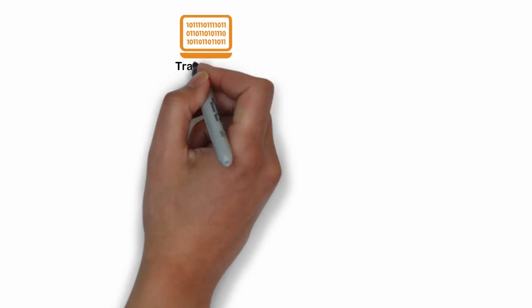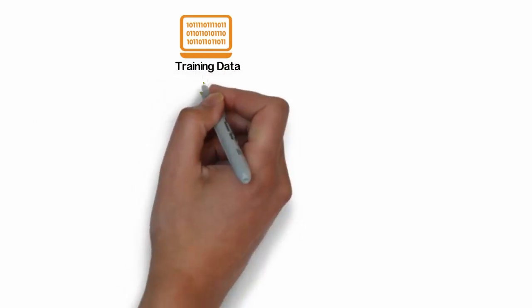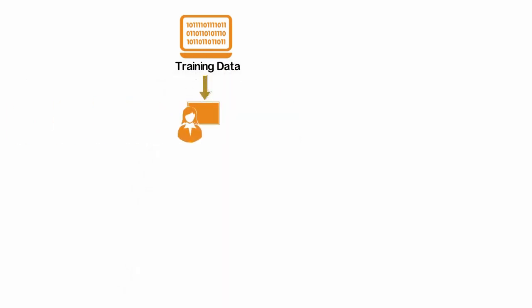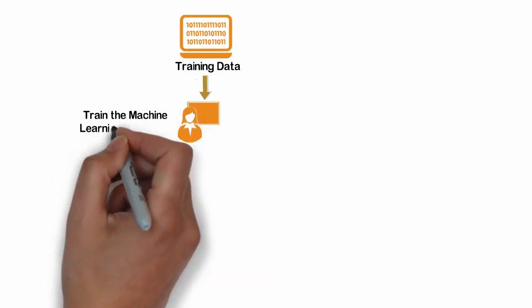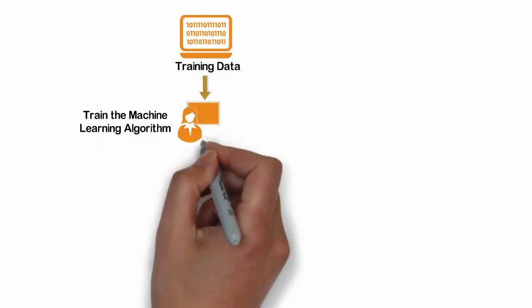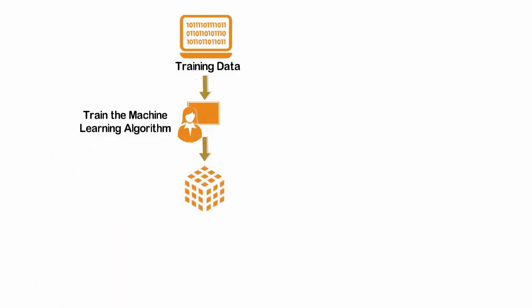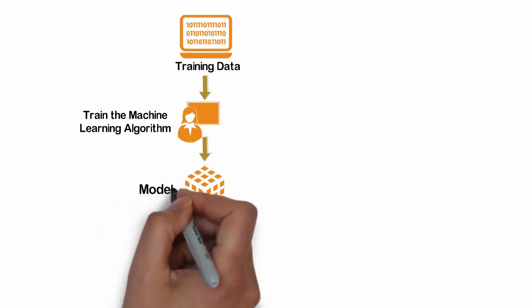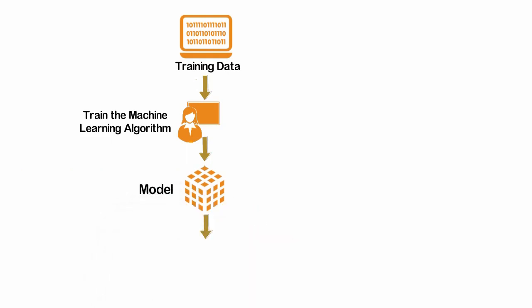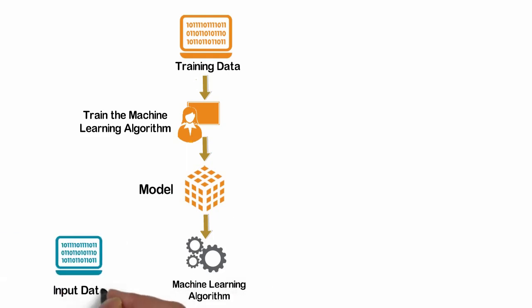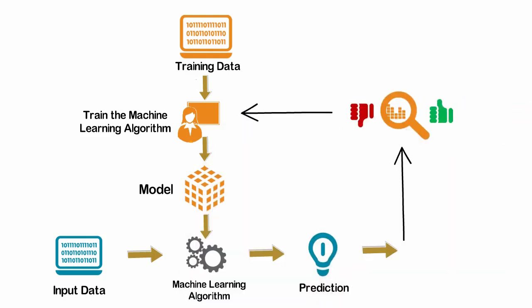Machine Learning algorithms are trained using historical data which results in a model. The model is then tested using test data by comparing the predictions with the actual values. The model is deployed once it reaches desired accuracy levels.